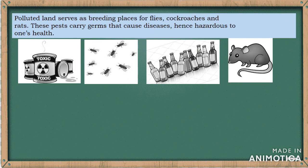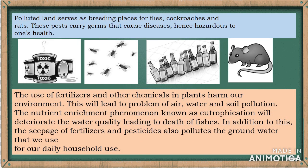Polluted land serves as breeding places for flies, cockroaches, and rats. These pests carry germs that cause diseases, hence hazardous to one's health. The use of fertilizers and other chemicals in plants harms our environment, leading to problems of air, water, and soil pollution. The nutrient enrichment phenomenon known as eutrophication will deteriorate the water quality, leading to the death of fish. In addition, the seepage of fertilizers and pesticides also pollutes the groundwater that we use for our daily household needs.